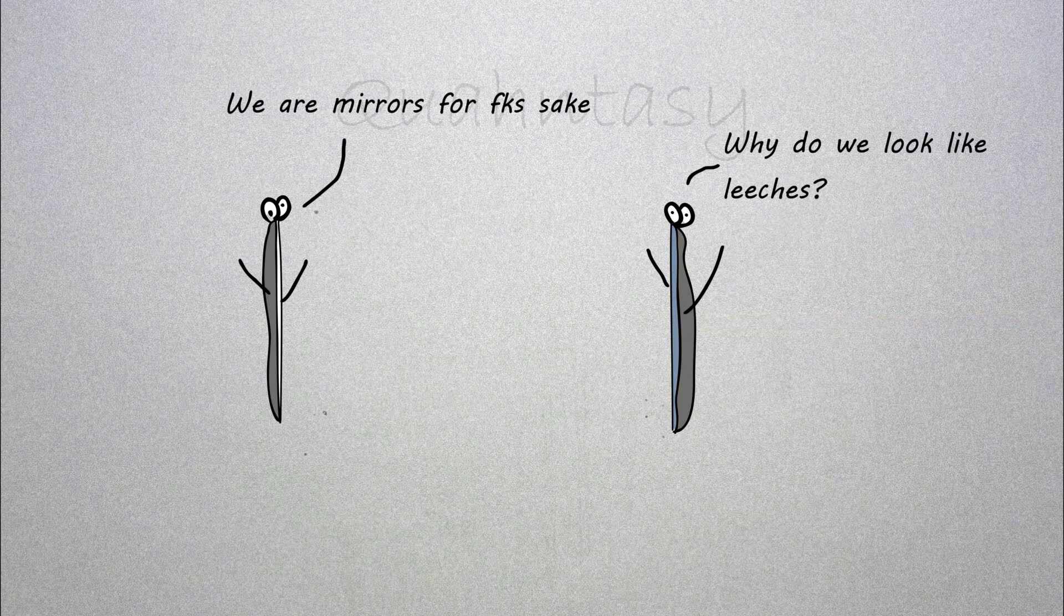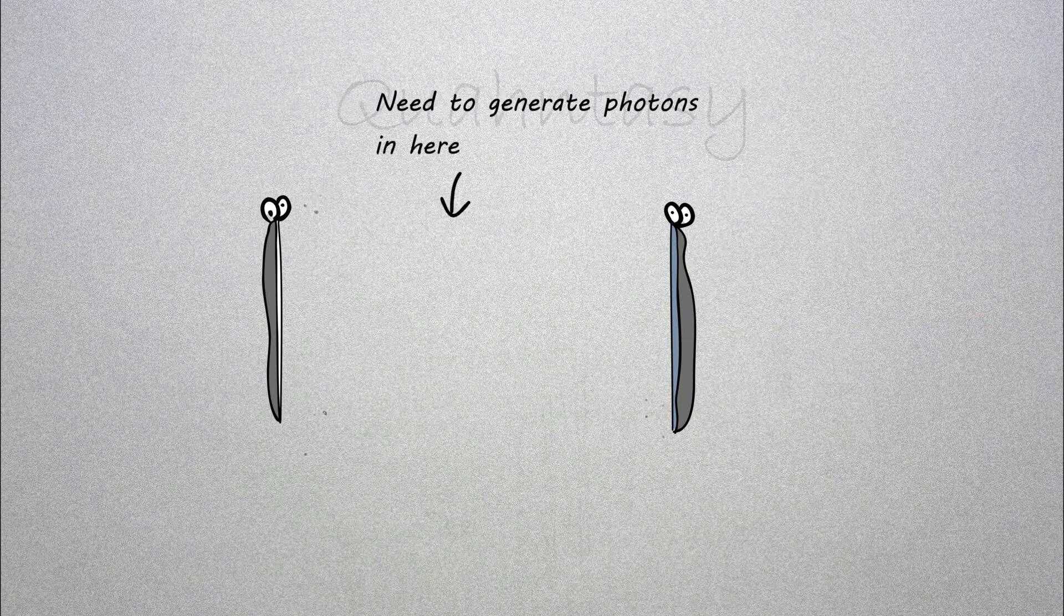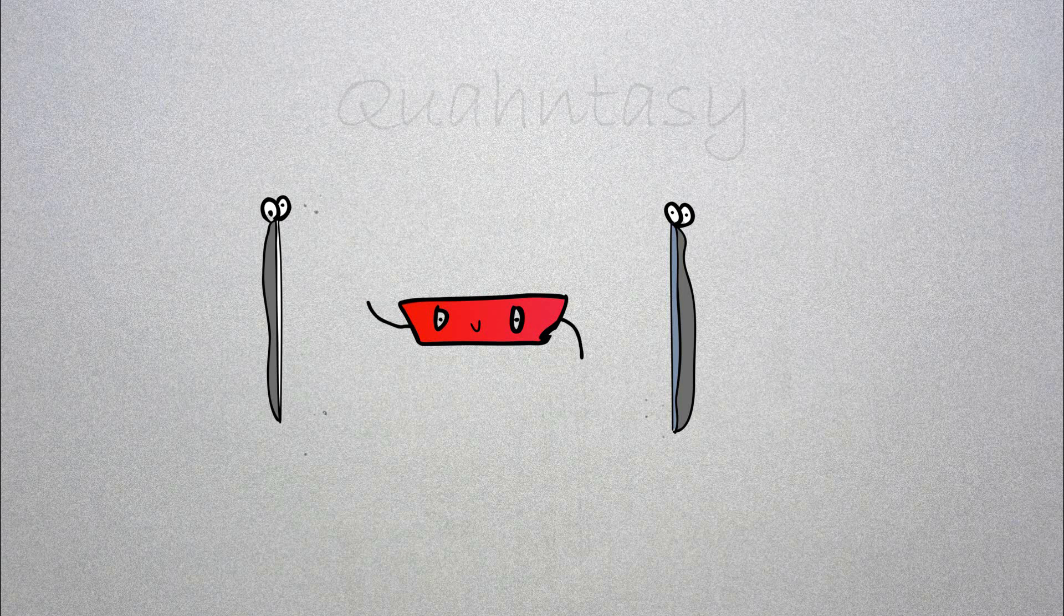Now that we have our two mirrors, what we need is someone to generate photons inside. With no one to generate photons, what are we doing here, right? So we place what's known as a gain medium in between these mirrors. In our case, let's say the gain medium is ruby.